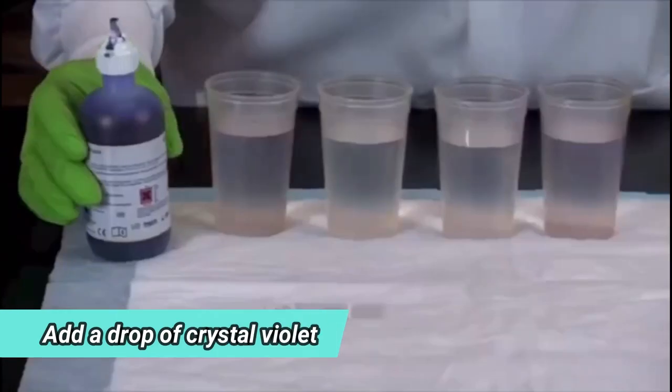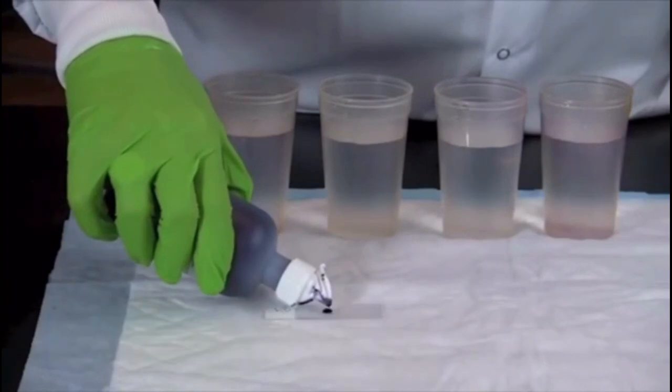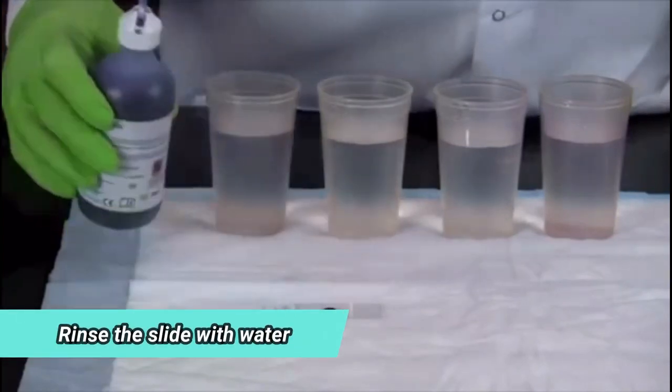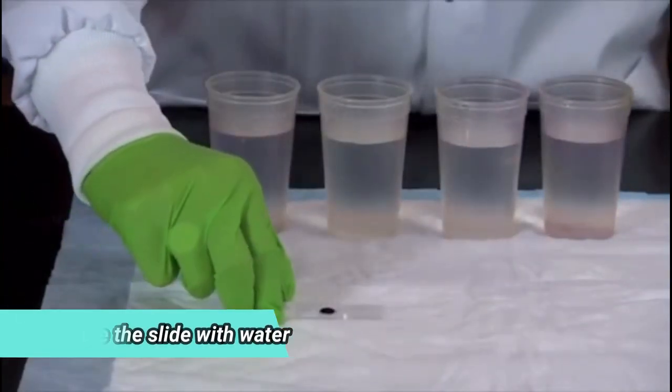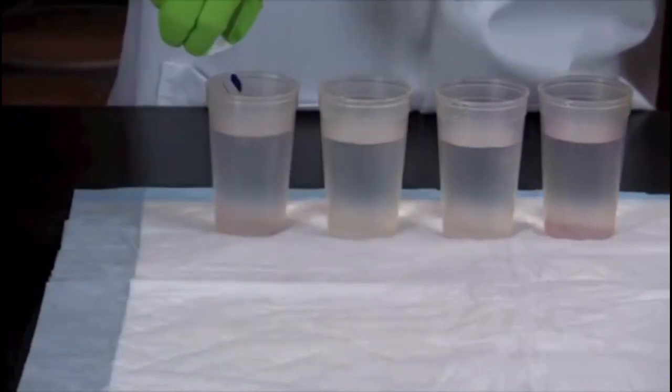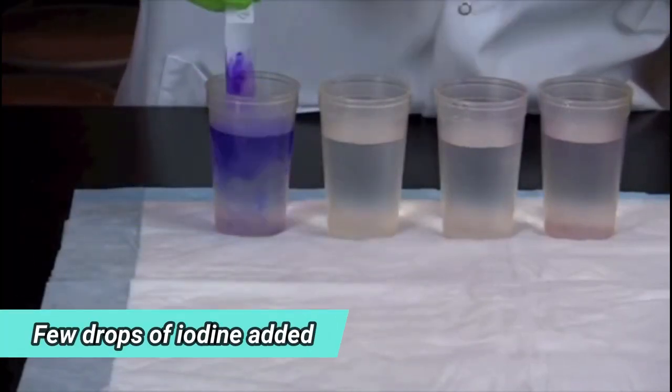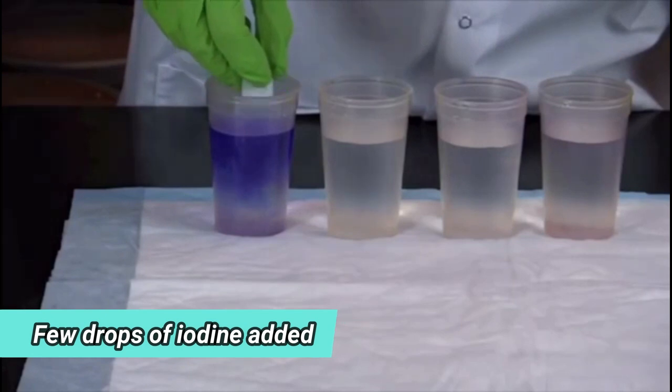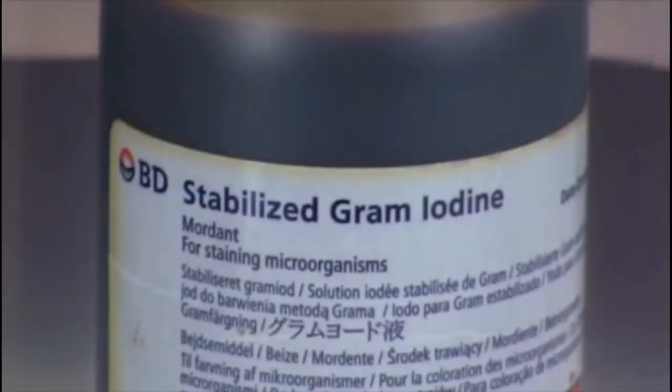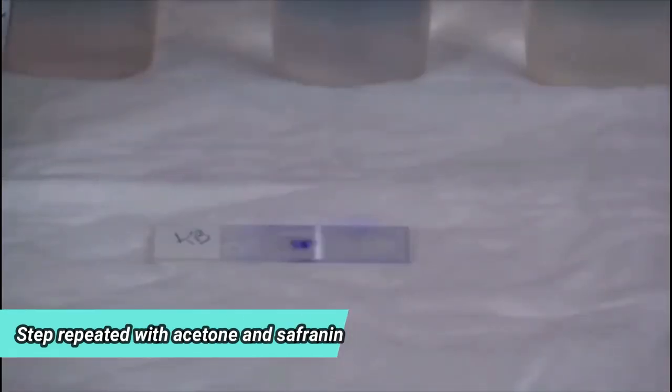After that drops of crystal violet stain drop into the wax circle. Next, rinse the slide with water until most of the stain are washed off. After that, a few drops of iodine are added and wait for a few minutes and rinse the slide into the beaker of water until the color are washed off. The steps are repeated with acetone and safranin.